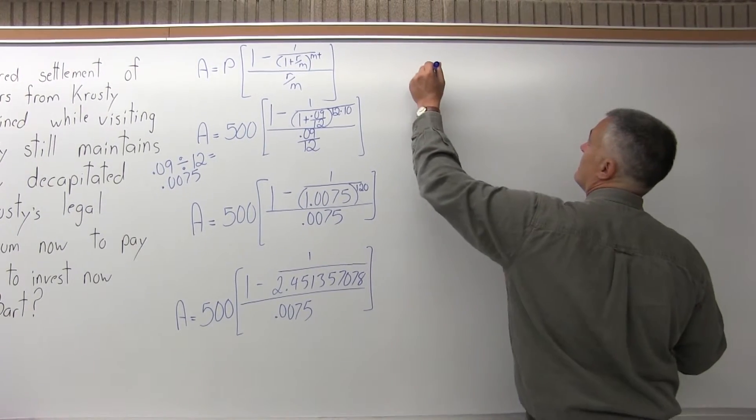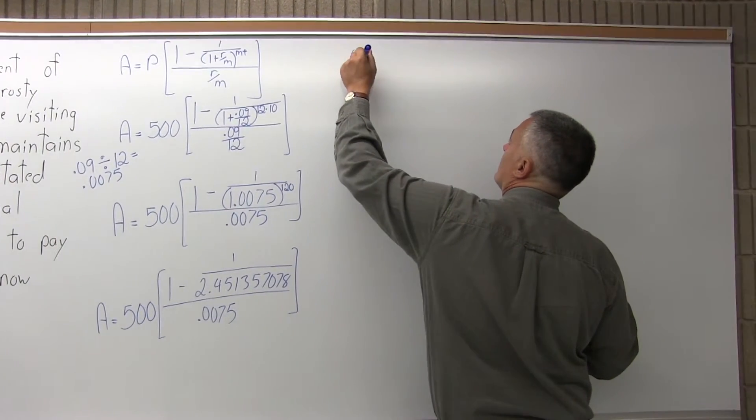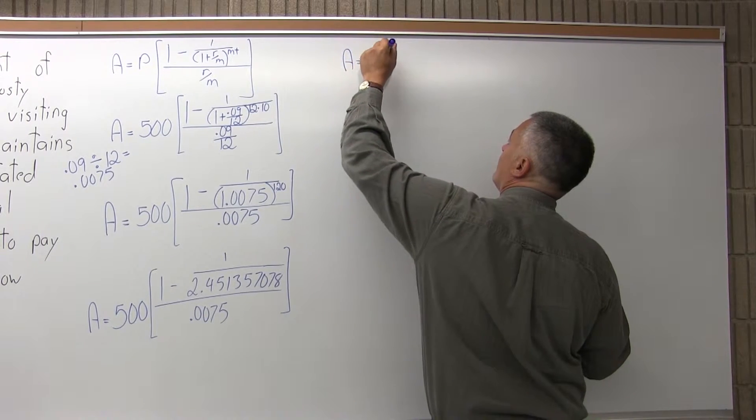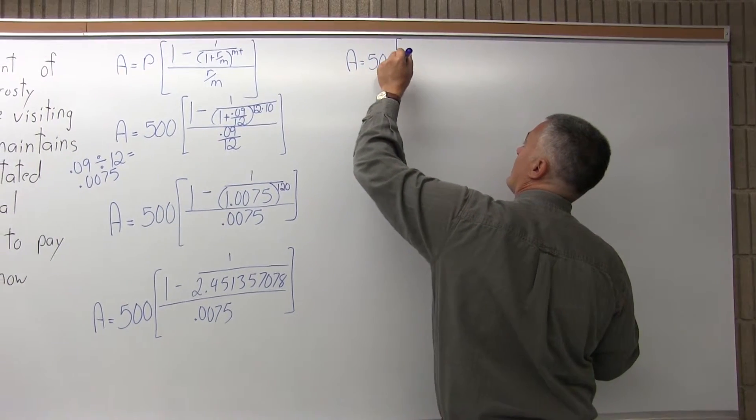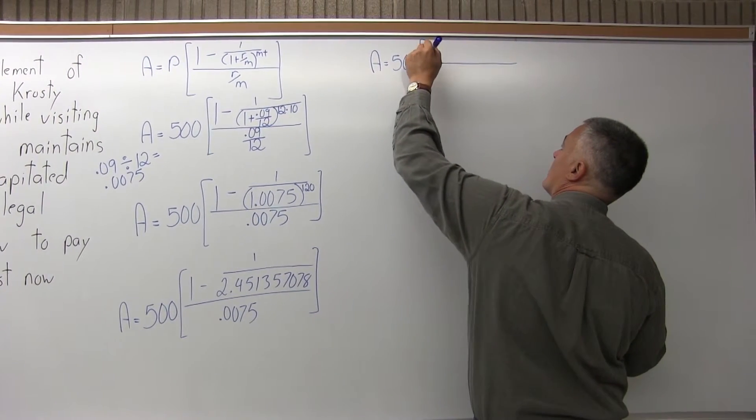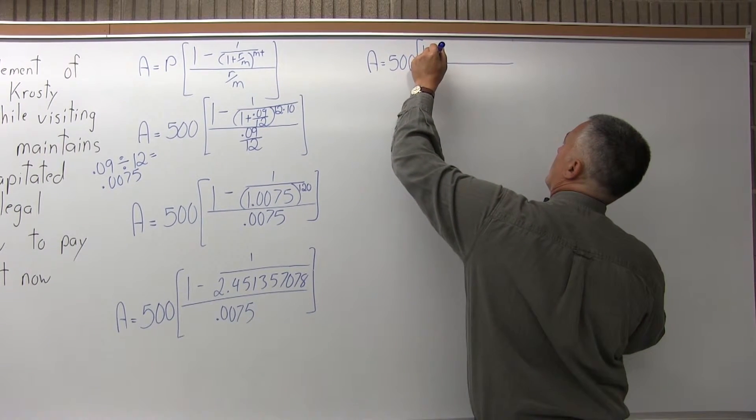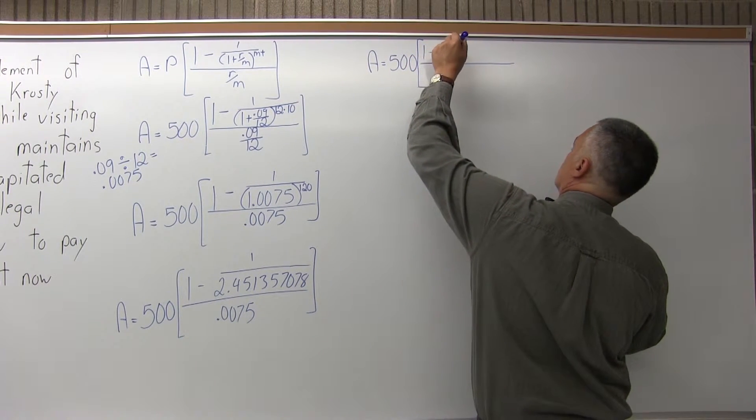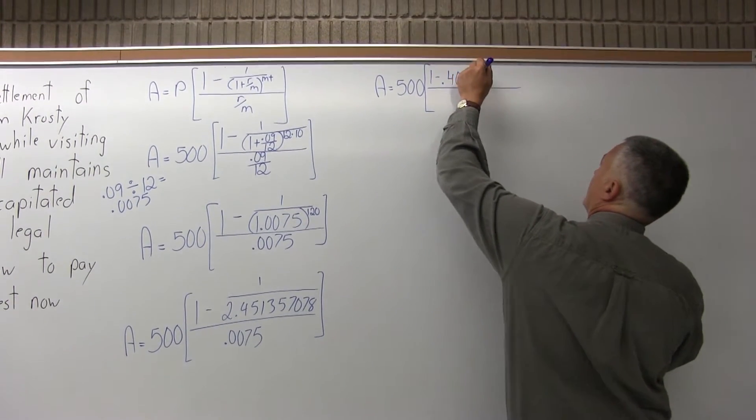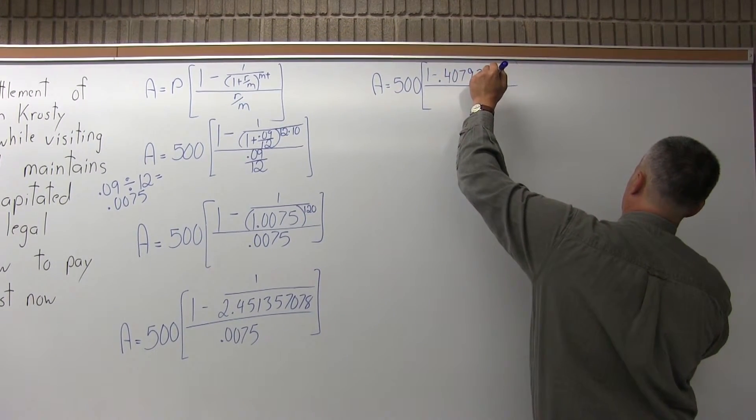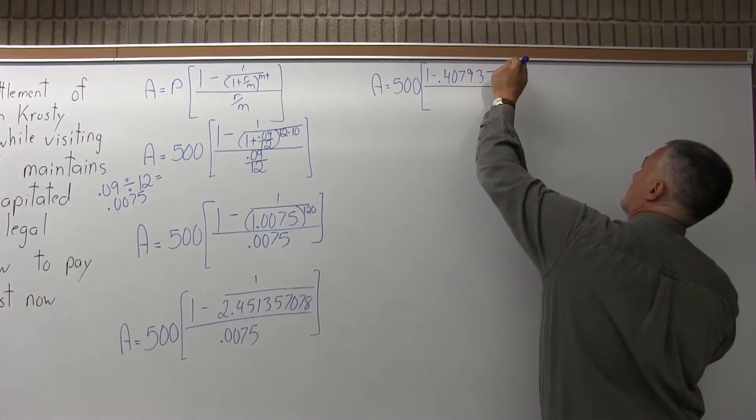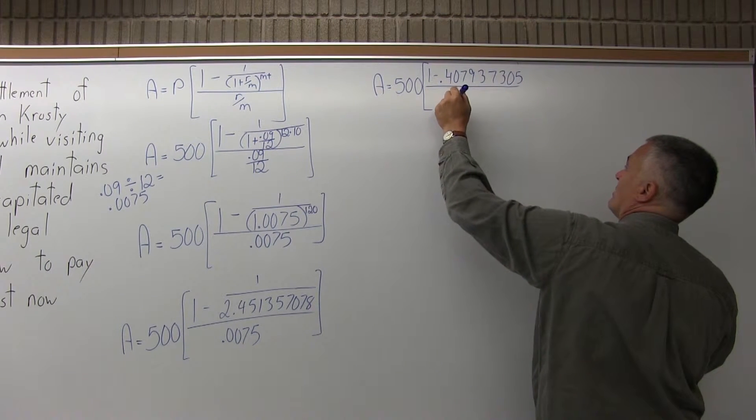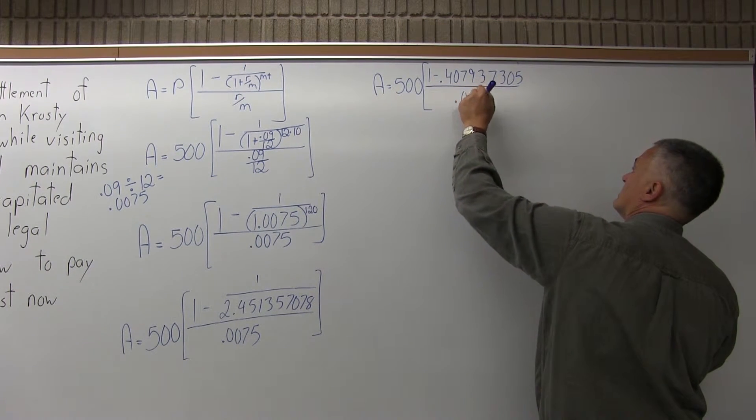So that will be A equals 500 times, in the brackets, the numerator of the brackets, 1 minus .407937305. And in the denominator of the brackets, .0075.